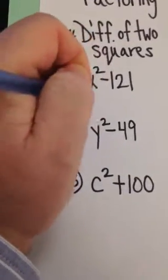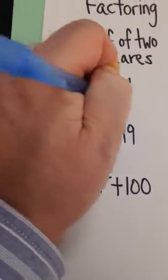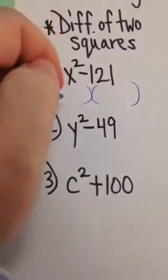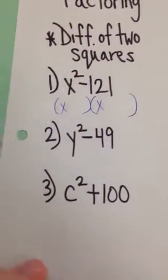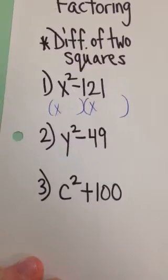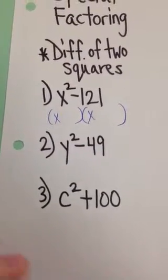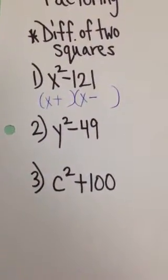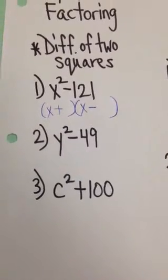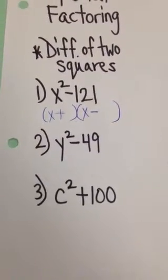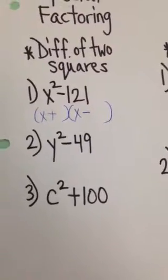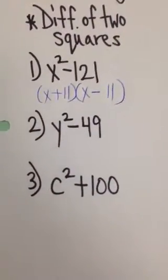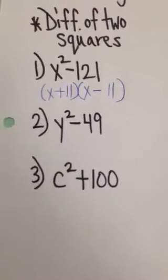For the first example, draw your two parentheses. X squared can be broken down as X times X. A difference of squares means you have a difference of signs — a plus and a minus. What goes in the last two spots? The square root of 121 is 11, so 11 goes into each spot and it's factored.